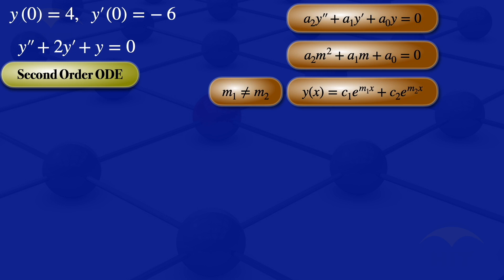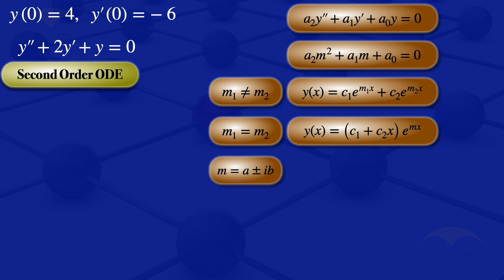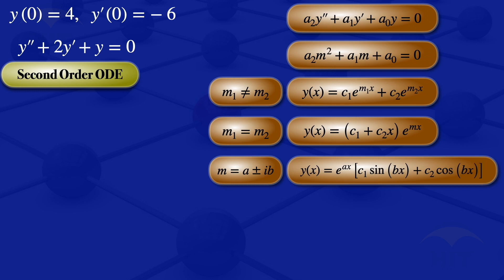If we have real repeated roots where m1 equals m2, which we call just m, the solution is y equals (c1 plus c2·x)·e^(mx). If we have complex conjugate roots m equals a plus or minus i·b, the solution is y equals e^(ax) times (c1·sin(bx) plus c2·cos(bx)).